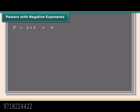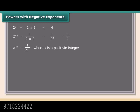Powers with negative exponents: 2 raised to the power 2 is equal to 2 into 2, which equals 4. 2 raised to the power minus 2 is equal to 1 upon 2 into 2, which equals 1 upon 2 raised to the power 2, which equals 1 upon 4. In general, a raised to the power minus n equals 1 upon a raised to the power n, where n is a positive integer.